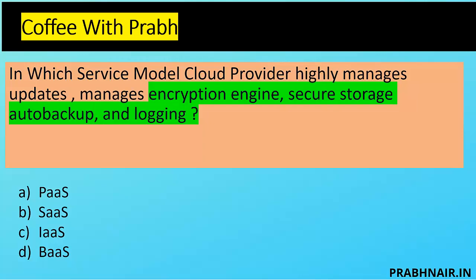In which service model does the cloud provider highly manage updates, manage the encryption engine (not the key), secure storage, auto backups, and logging? BaaS is not a standard model — backup as a service is part of a SaaS solution. In IaaS, the customer has limited control but encryption engine, secure storage, and auto backup responsibility mostly lies with the cloud customer. In PaaS, the customer still has some control over storage. But in SaaS, we pay for the services and in the back end the provider manages the engine — the key is with us but they manage the engine. They manage storage, providing read-only defined configured storage, taking backups, and enabling logging of their application. That's why the answer is SaaS.